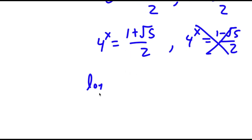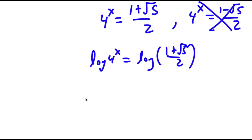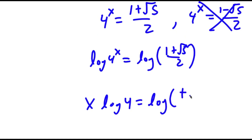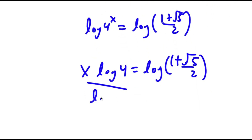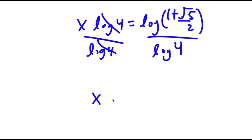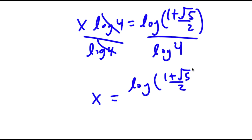To solve this, I'm going to take the log on both sides. So now I have x times log 4 is equal to log of 1 plus the square root of 5 over 2. If I divide both sides by log 4, these two cancel out, and I get x is equal to log of 1 plus the square root of 5 over 2, divided by log 4.